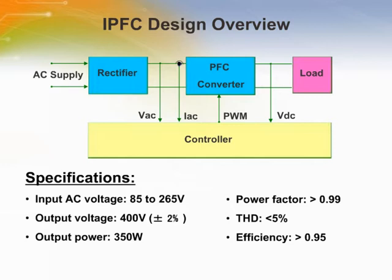As may be observed, the input is an AC supply and the output of the power factor correction is a DC voltage. An ideal power factor correction makes sure that its input impedance is purely resistive, allowing maximum use of real power. The feedback signals needed for the control loop are the rectified AC voltage, input AC current, and output DC voltage. The output of the control block is a pulse width modulation signal.